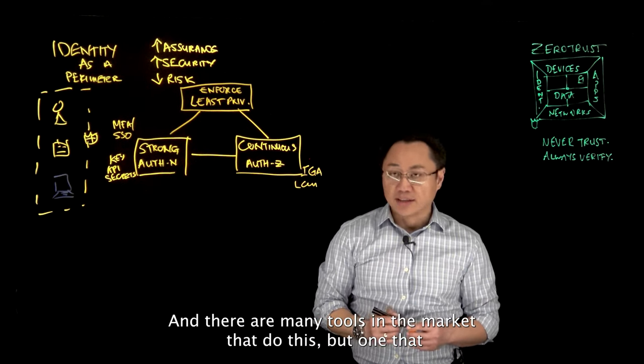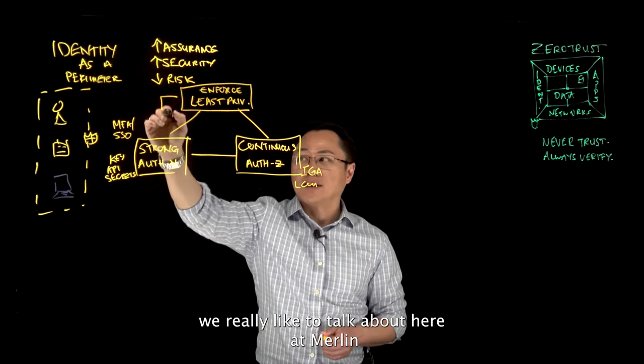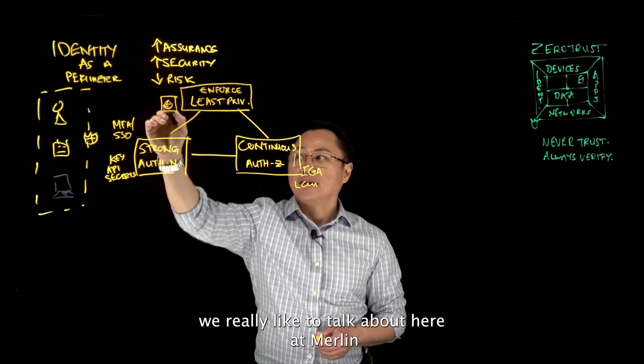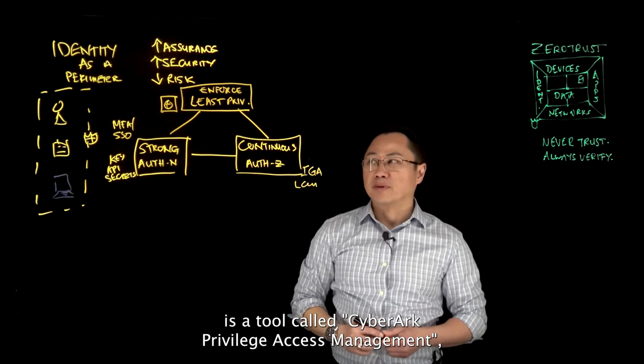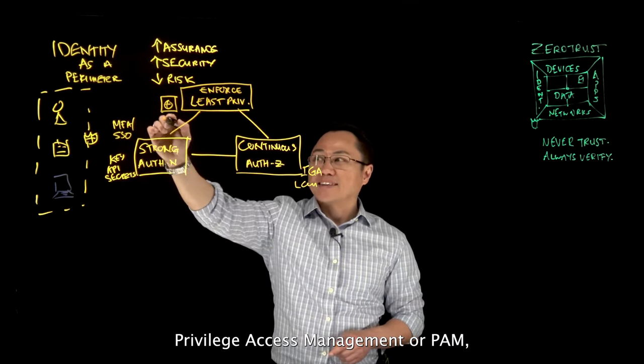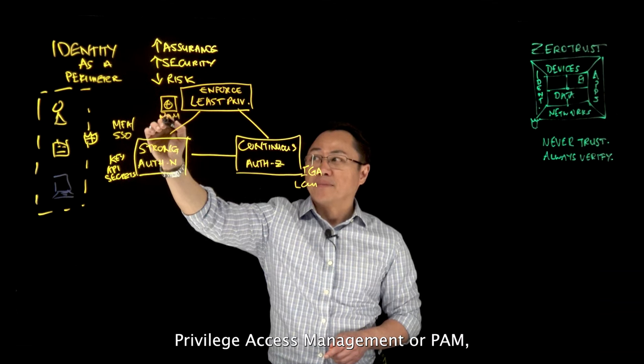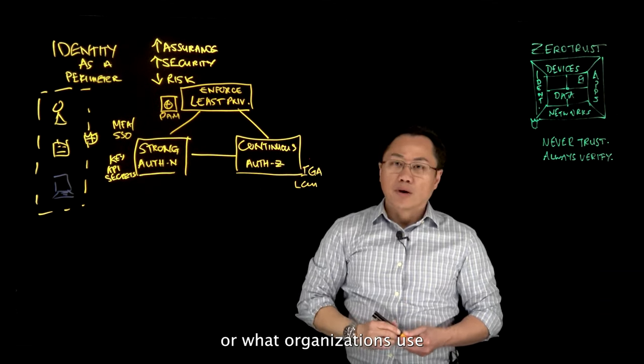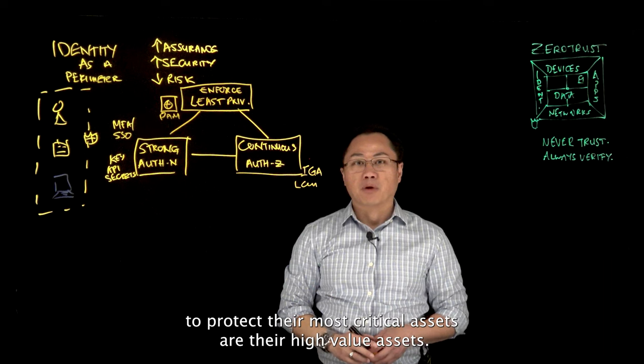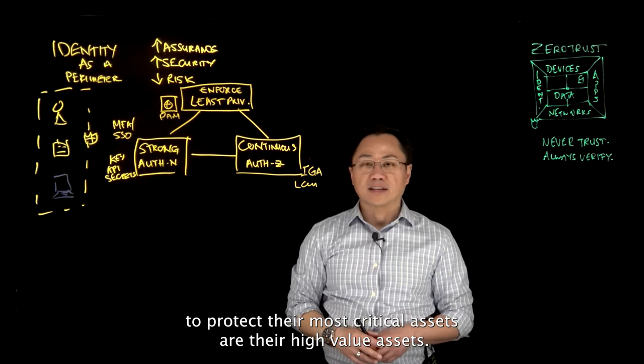And there are many tools in the market that do this, but one that we really like to talk about here at Merlin is a tool called CyberArk Privilege Access Management. Privilege Access Management, or PAM, are what organizations use to protect their most critical assets or their high value assets.